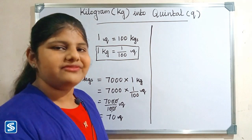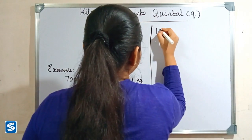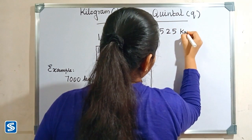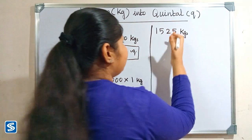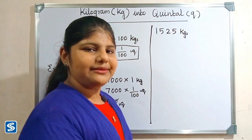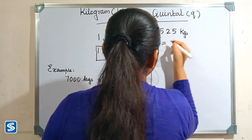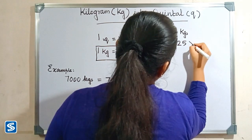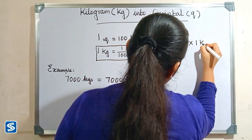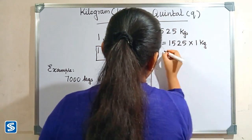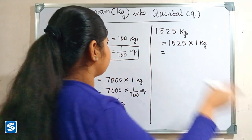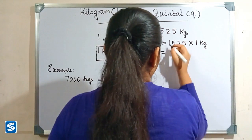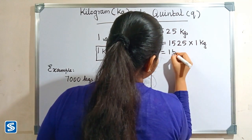Next, let's take one more example. We can take 1525 kilograms. So 1525 kilograms can be written as 1525 multiplied by one kilogram. Now we have to substitute 1/100 quintal in the place of one kilogram.